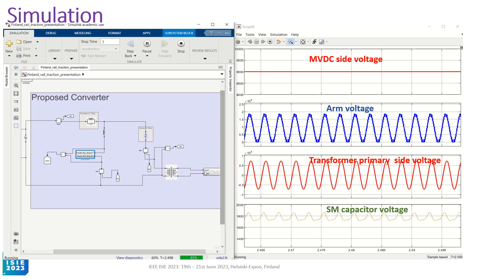And further, if you see this side, these are the waveforms: MVDC side voltage, arm voltages, transformer primary side voltage, and sub-module capacitor voltage. If you see the arm voltages, they have 11 levels because we have used 10 number of sub-modules.